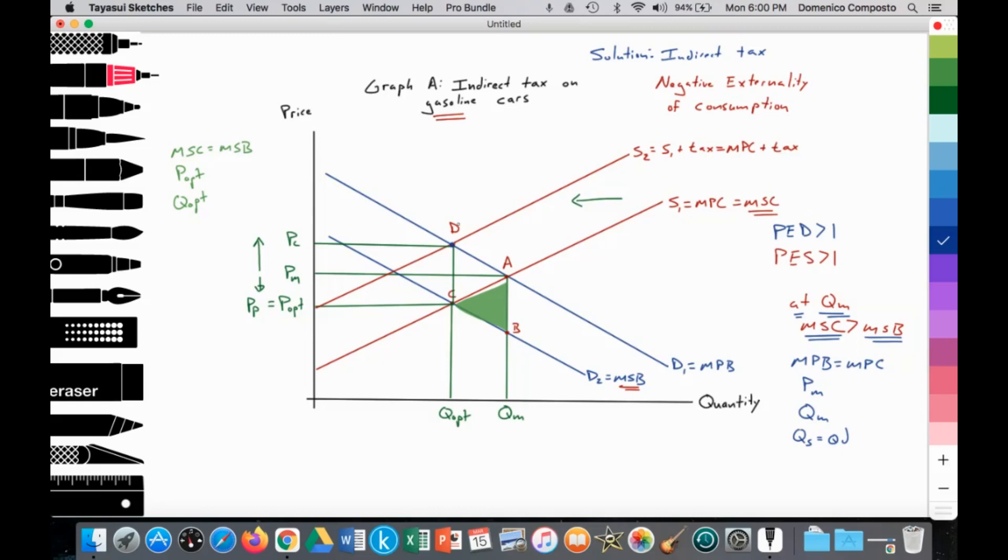That creates a new equilibrium at point D, where S2 equals D1, raising the price paid by households from PM to PC. That reduces the quantity demanded along the demand curve from point A to D or from QM to Q-opt. That also reduces the price received by the producer from PM to P-opt, which is equal to price received by producer. The lower price received by the producer reduces the quantity supplied from point A to point C or from QM to Q-opt. Thus, the indirect tax in theory is successful in achieving the social optimum quantity of Q-opt.